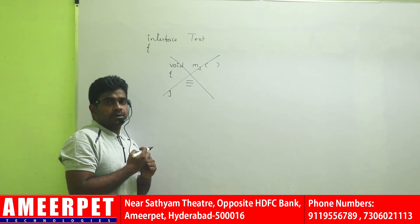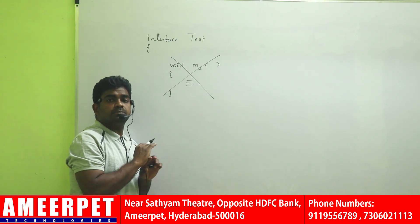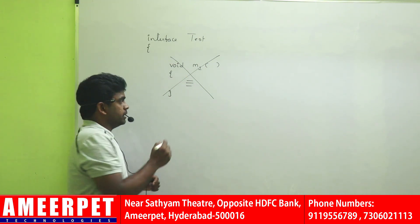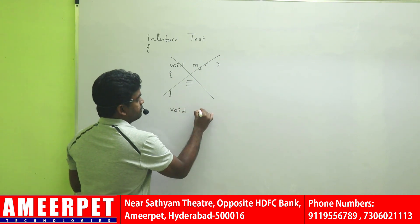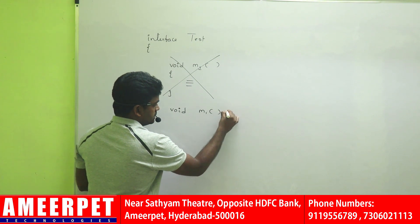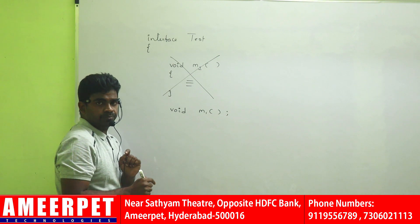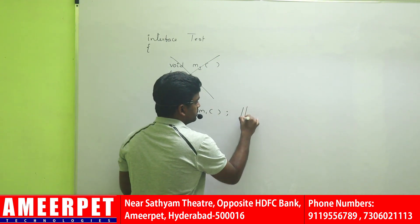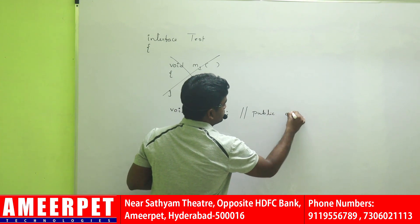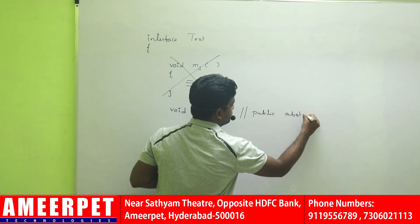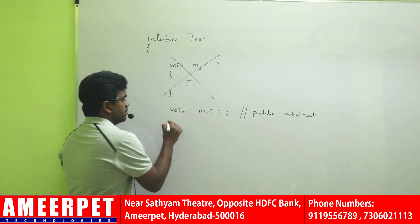We define abstract methods using the abstract keyword, but inside an interface the abstract keyword is not required. If you just write a method like 'void M1' ending with a semicolon, no need to specify anything else. By default, interface methods are public and abstract.